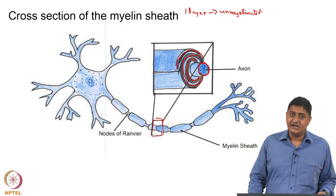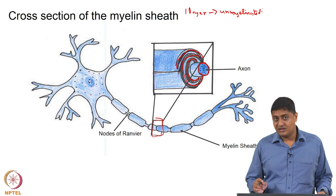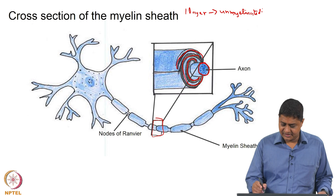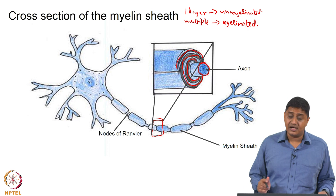Almost all axons are myelinated to at least one layer. By definition, when we say unmyelinated axon it does not mean there are zero layers or no myelination — when there is only one layer of myelination it is called an unmyelinated axon. When there are multiple layers they are called myelinated axons. This is a slight difference in terminology between regular English and neuroscience.